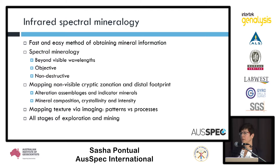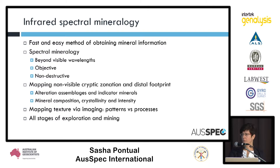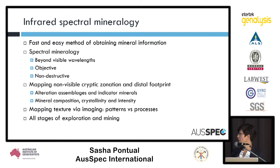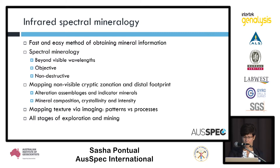You can also look at cryptic zonation, such as compositional variations in certain minerals and crystallinity variations, and that can give us really useful data for vectoring into different parts of your alteration system. When you're working with image data, you can also look at textural information. This is available at all stages of the exploration and mining cycle.